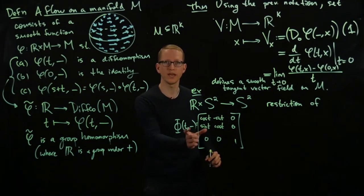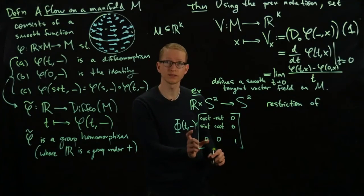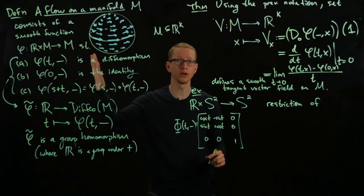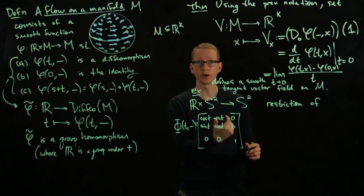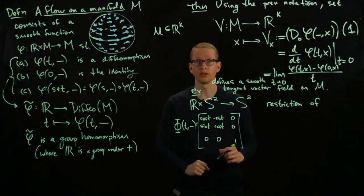So you can check that this restricts to a flow on the sphere. And that's because it takes any (x,y,z) to another point on the sphere.